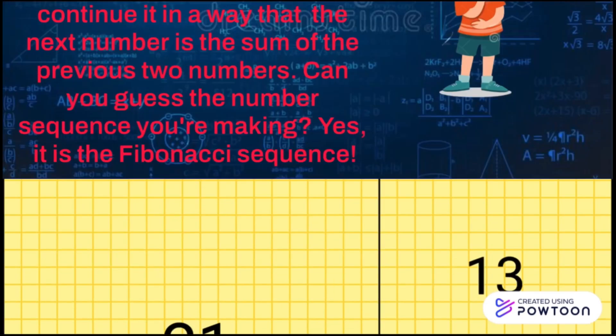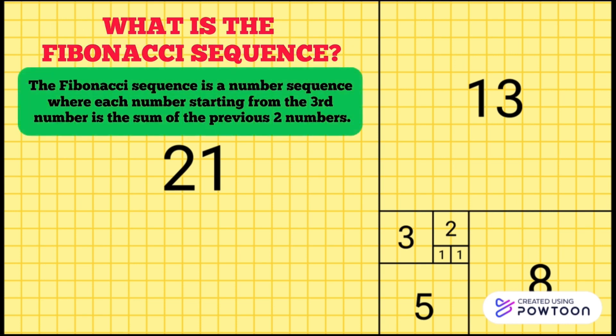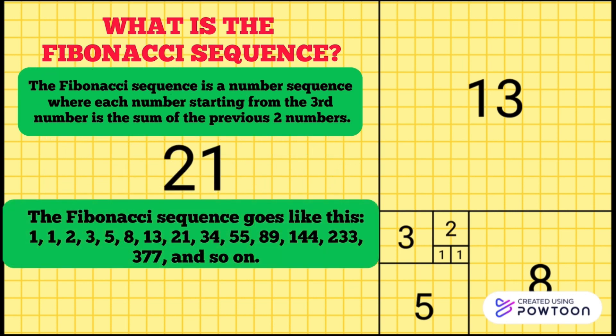What is the Fibonacci sequence? The Fibonacci sequence is a number sequence where each number, starting from the third number, is the sum of the previous two numbers. The Fibonacci sequence goes like this: 1, 1, 2, 3, 5, 8, 13, 21, 34, 55, 89, 144, 233, 377, and so on.